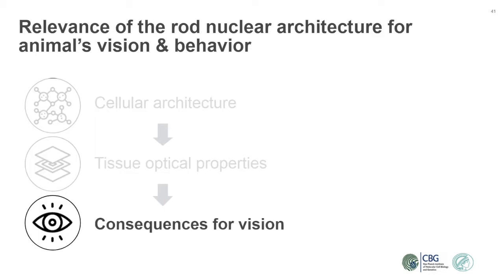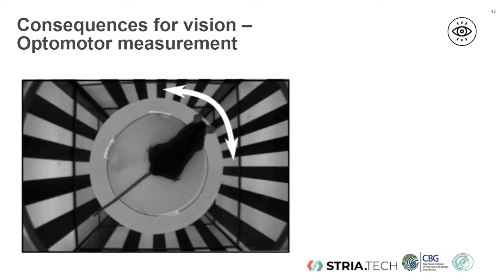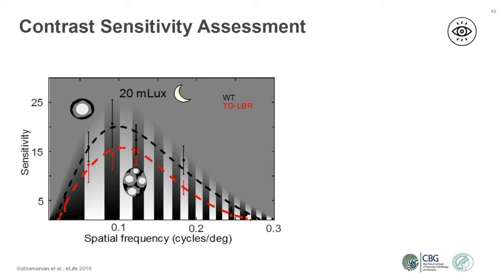Next we asked: what are the visual consequences for the animal of these improvements in the optical properties of the retina? For this, we measured the contrast sensitivity of normal adult mice and LBR adult mice with the help of the optomotor reflex using the Stritec Optodrum. We determined the contrast sensitivity of the mice at 12 different spatial frequencies or resolutions to obtain a contrast sensitivity function.